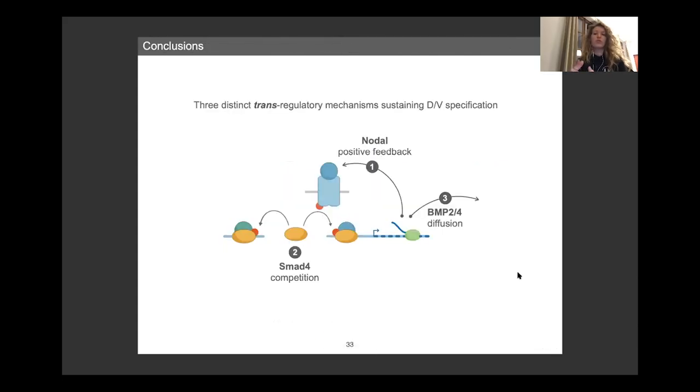So to finish, we have three distinct regulatory mechanisms that have a key role for sustaining dorsal-ventral axis specification. We have the nodal feedback that maintains a ventral organizer. We have the competition for SMAD4 that prevents both the nodal and the BMP24 pathway to be co-expressed. And lastly, we have the diffusion of BMP24 from the ventral to the dorsal side that enable the expression of the dorsal pathway.